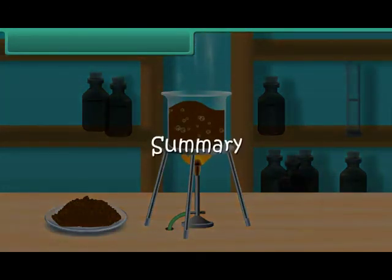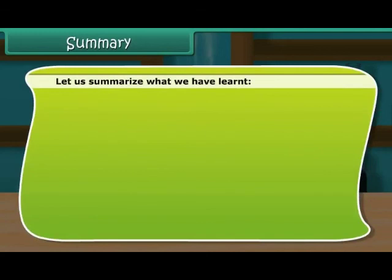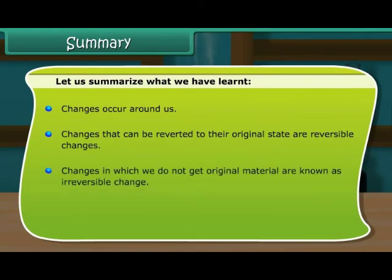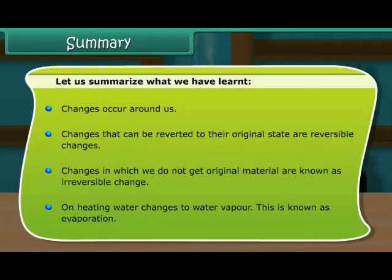Let us summarise what we have learnt. Changes occur around us. Changes that can be reverted to their original state are reversible changes. Changes in which we do not get the original material are known as irreversible changes. On heating, water changes to water vapour. This is known as evaporation.